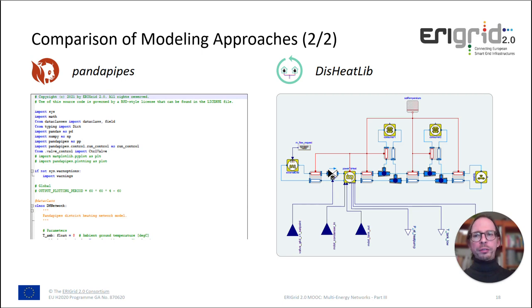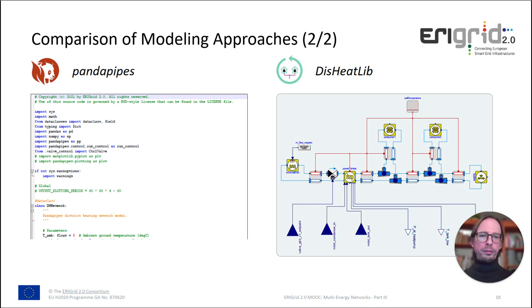The approaches also differ in the way you do the modeling. PandaPipes uses Python, so it's text-based modeling in the editor. The DC Clip is a Modelica library, so you can use available Modelica editors for modeling the system — and typically, as indicated by the screenshot, you can do it in a graphical editor.